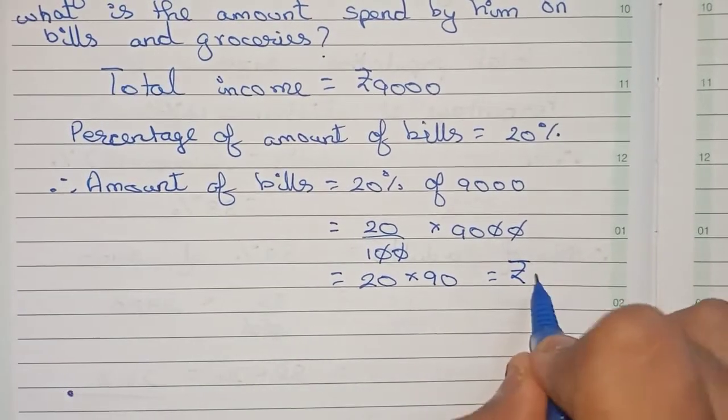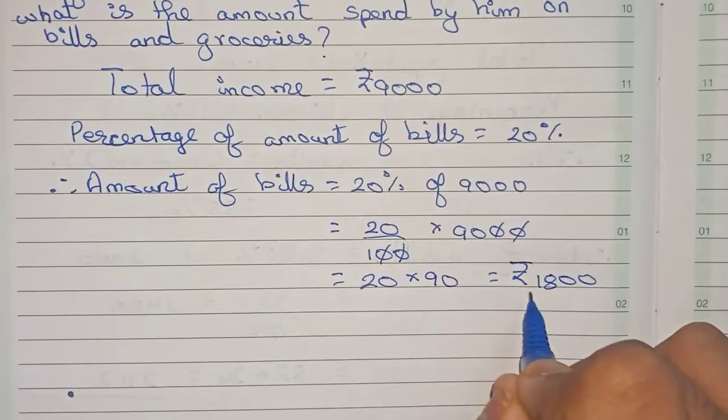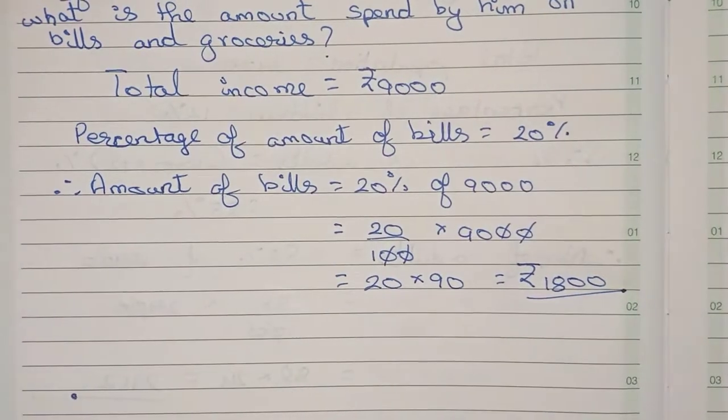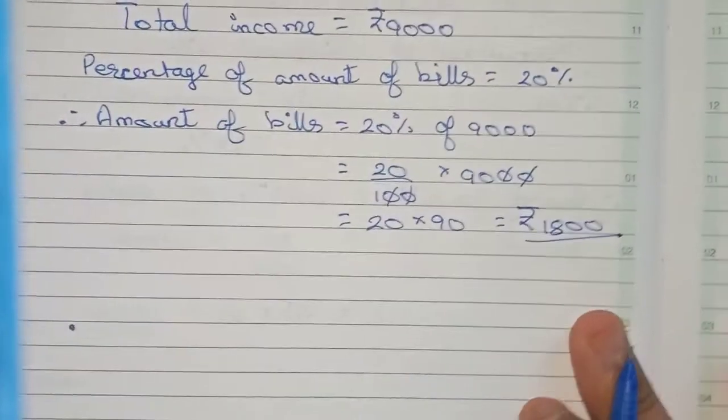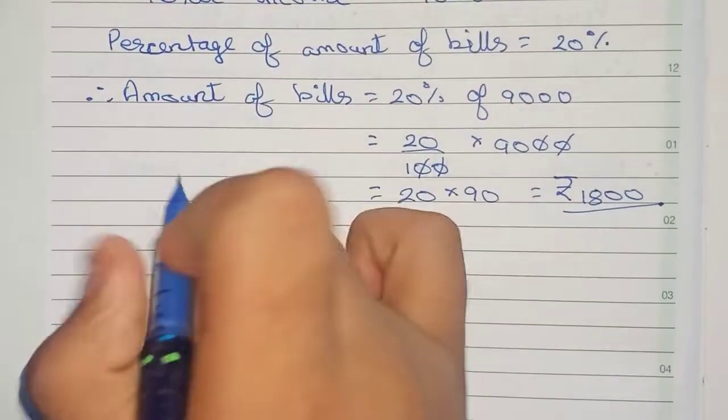Cut the zeros, so remains 20 into 90, which is equal to rupees 1,800. So 1,800 is the amount that is spent on bills. Now write the percentage of amount of groceries, that is equal to 15% as given.